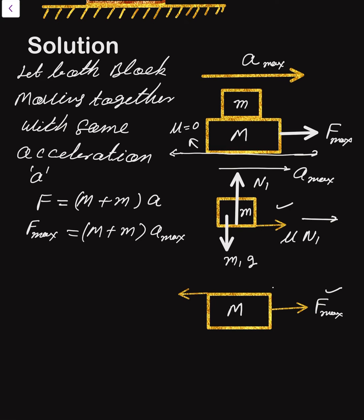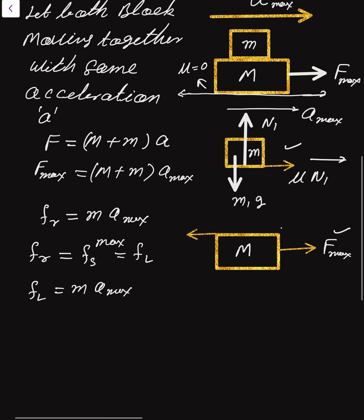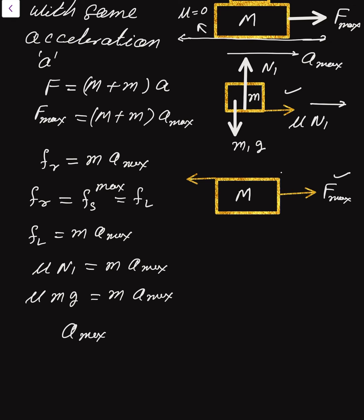The requirement: frictional force fr equals m into a max. If both blocks move together at a max, then fr equals fs max, or the maximum static friction force. So fl equals m into a max, where fl is μ into N1.